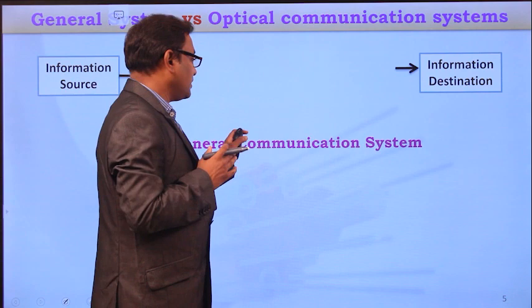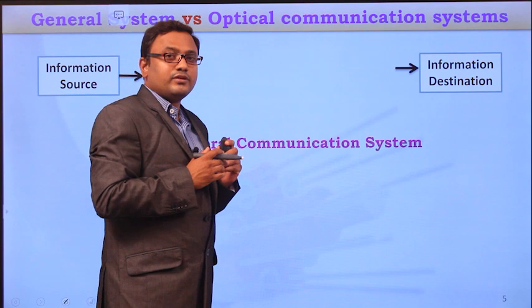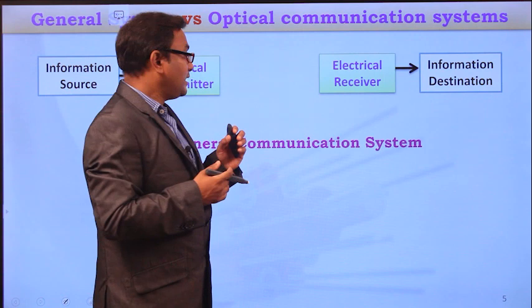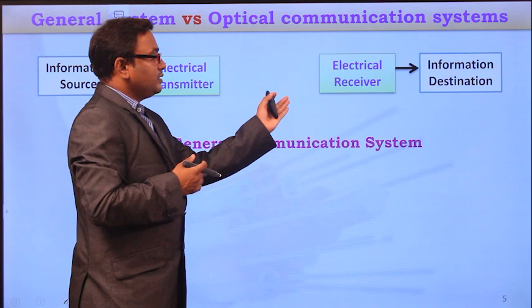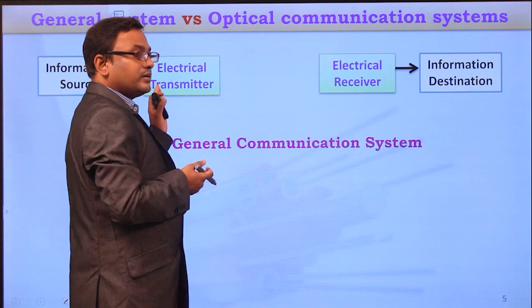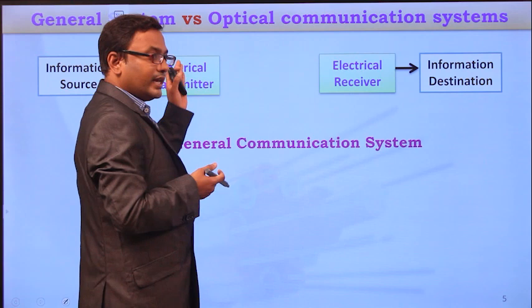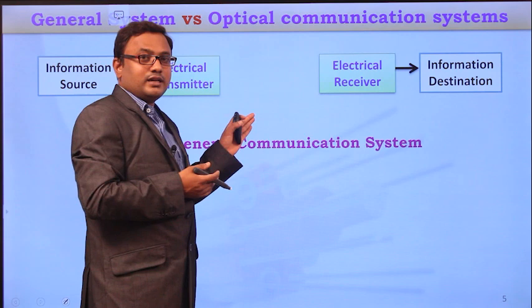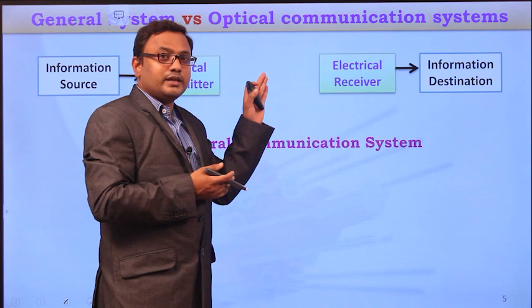To convert the physical information into electrical signals, there is an electrical transmitter at the source side and an electrical receiver at the receiver side. The main purpose of this electrical transmitter is to convert the physical information into an electrical signal. That converted electrical signal will be digitized, then encoded, then modulated, then amplified, and that signal will be sent to the channel.